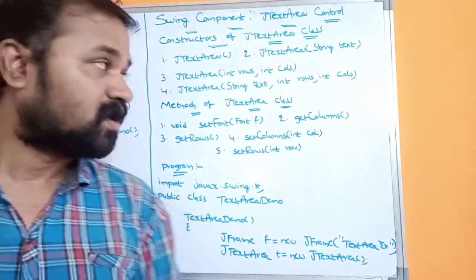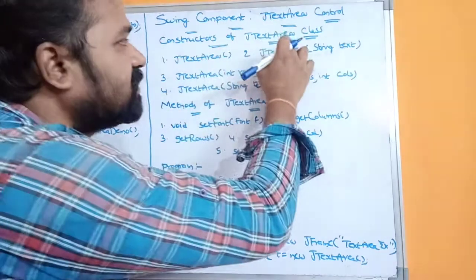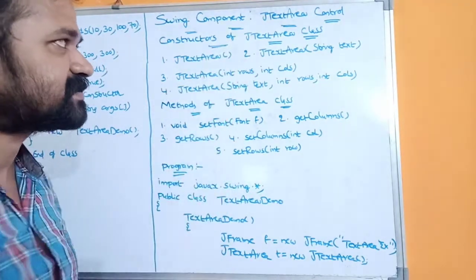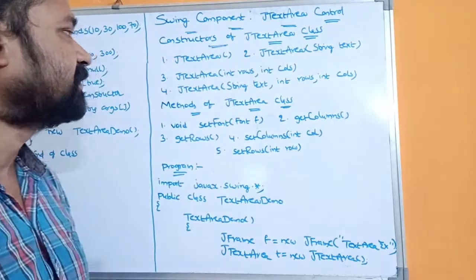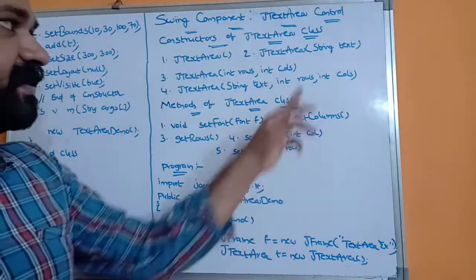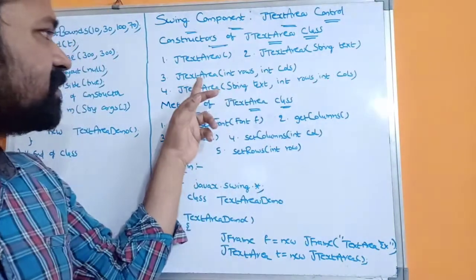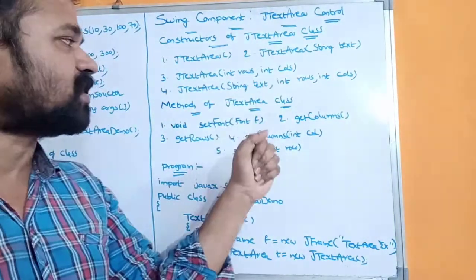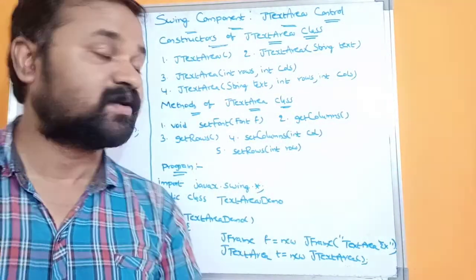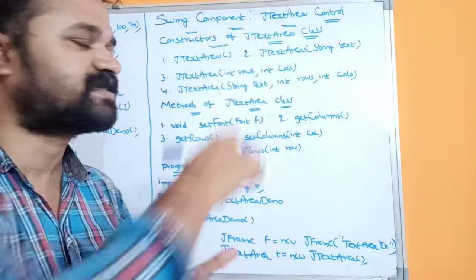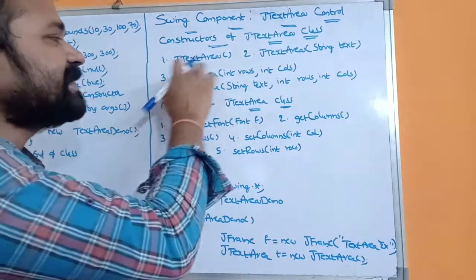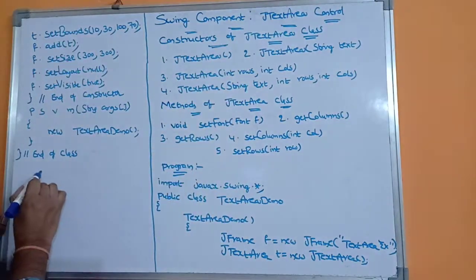Let's see about the constructors of the JTextArea class. The first constructor is JTextArea() — an empty constructor. The second constructor accepts a String as the argument. The third constructor accepts two integers as the argument. The fourth constructor accepts a String and two integers as the argument. We can use any of these constructors to create a multiline text box.